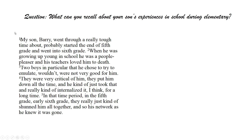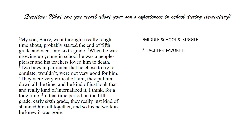The numbers we place are for us to know which code corresponds to which statement. So for the first sentence, I would define it and put the code 'middle school struggle' — because he was having difficulty in fifth and sixth grade. You could also put 'elementary year struggle' — it would be up to you. The number represents the first sentence, so you can easily locate which code was used for which statement. For the second statement, 'when he was growing up young in school, he was a people pleaser, his teachers loved him' — it's talking about love and teachers, so we could put 'teacher's favorite.'